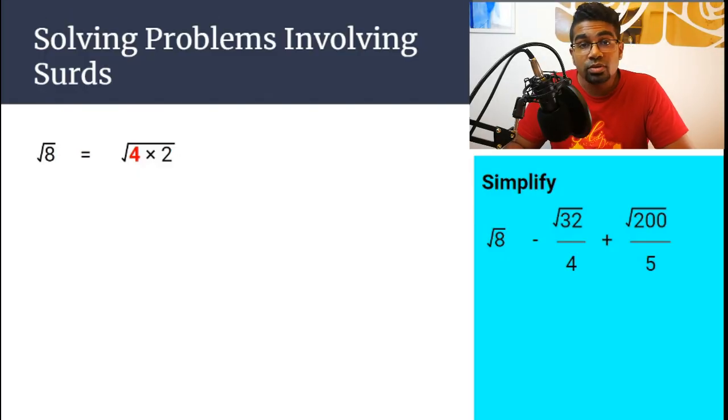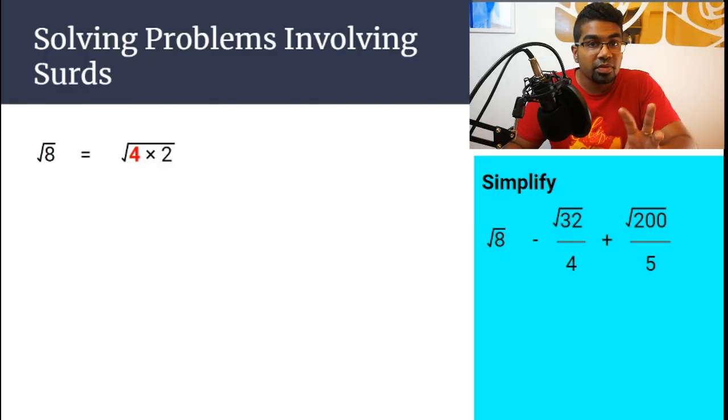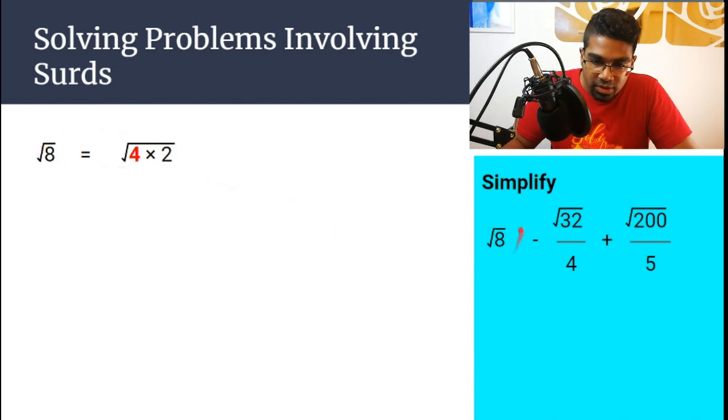The first thing to do is to look at the number inside the square root, and then to factorize the perfect square out. So when we have a square root, for example, here we have square root 8, so square root of 8, and we look at 8, and we factorize the perfect square out.